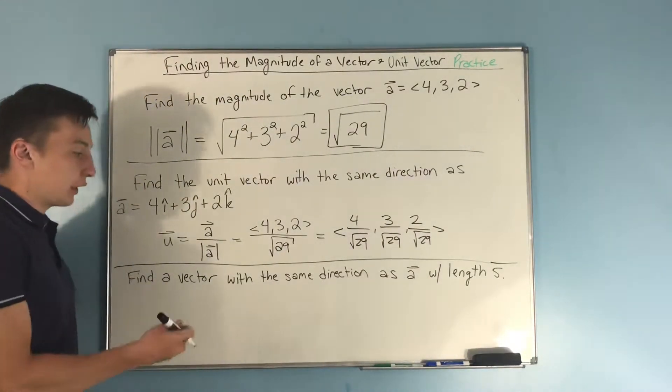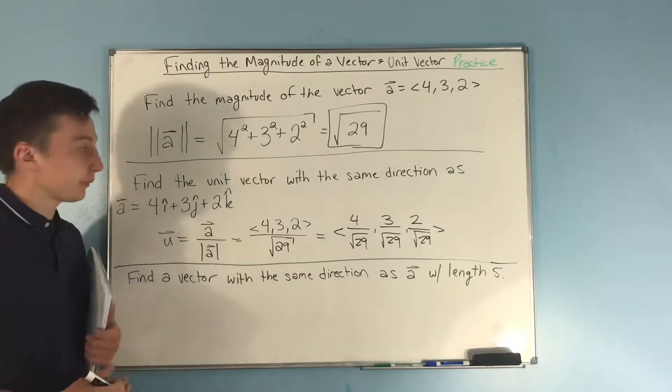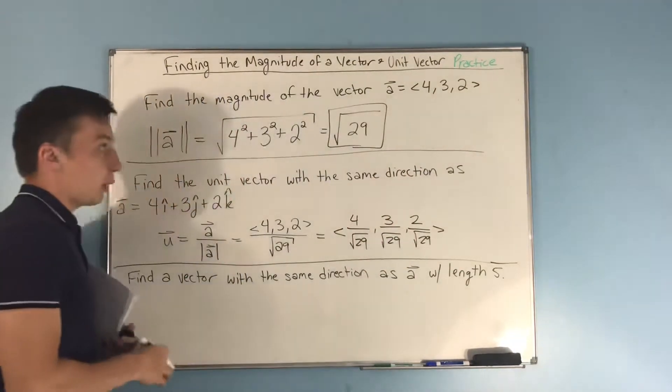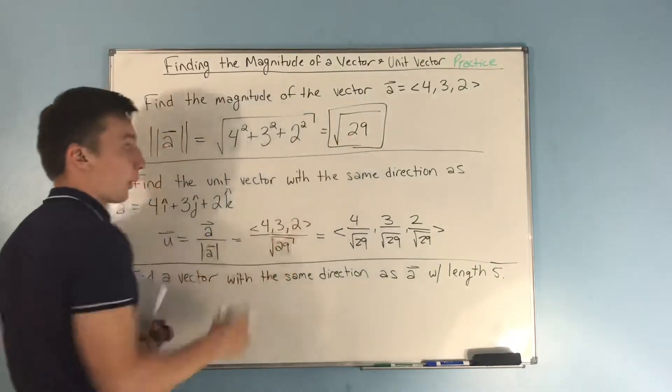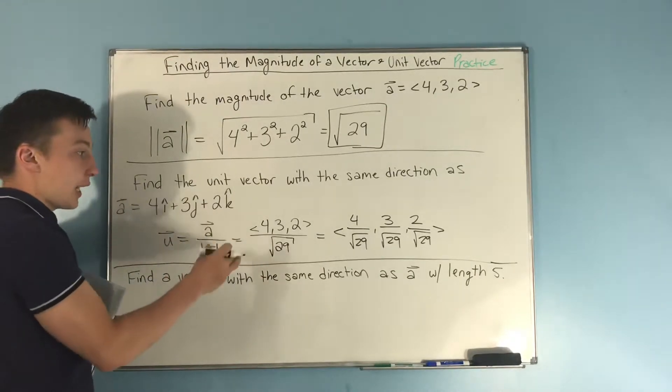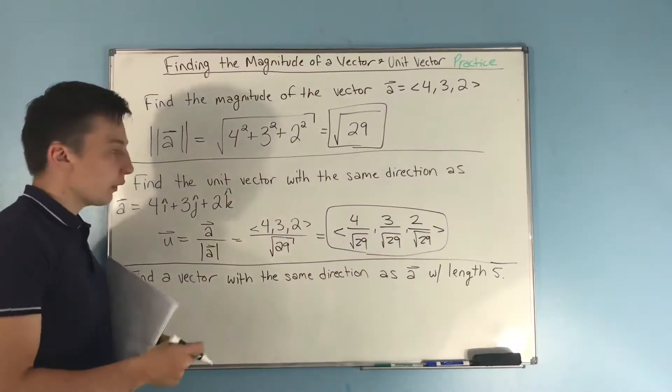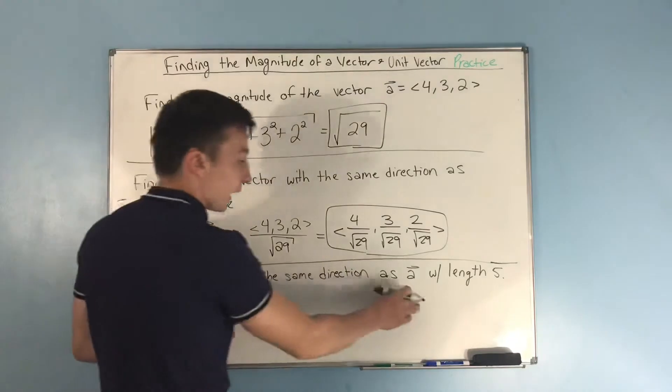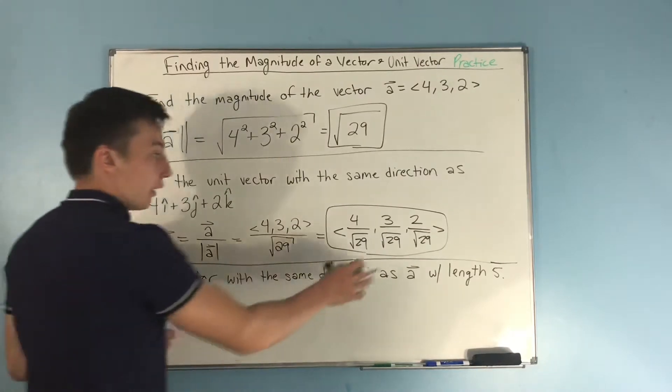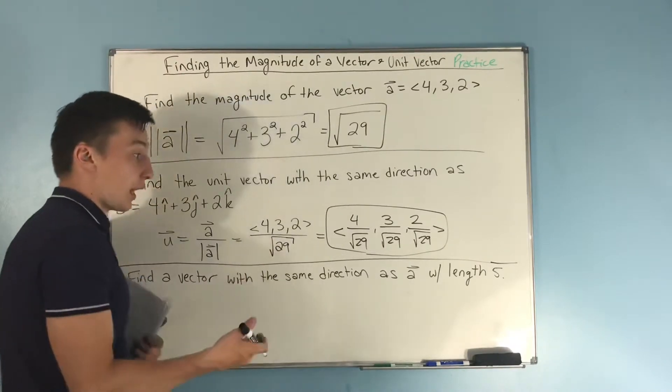Finally, we want to find a vector with the same direction as a that has the length 5. So, how do we go about doing this? Well, we originally started out with vector a being <4,3,2>. So, we found the magnitude, right? That's √29, and we divided by the magnitude from our original vector to get this unit vector, right? And it has length 1. So, if we want a vector that has the same direction as a, which this vector does, that has length 5, well, we have to multiply this by 5. Why? Because the length of this right now is 1, and if we multiply by 5, the new length will be 5.